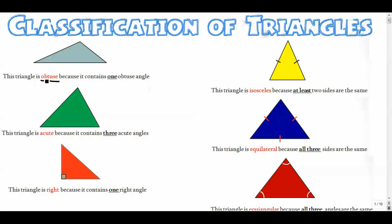Let's look at this first one: obtuse. This blue triangle right here is obtuse because it contains one obtuse angle. So if it contains one obtuse angle, then we call the whole triangle obtuse. Remember, obtuse means that the angle is bigger than 90 degrees.